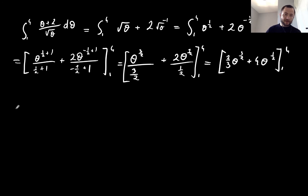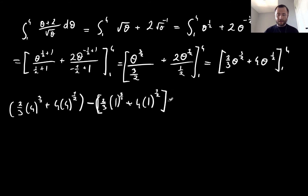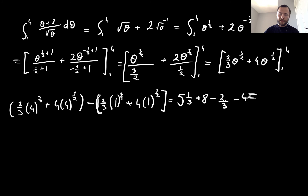Substituting the values: (2/3)(4^(3/2)) + 4(4^(1/2)) minus (2/3)(1^(3/2)) + 4(1^(1/2)). Calculating: from the first bracket I get 5 and one third plus 8; from the second bracket I subtract two thirds and 4. Adding everything together gives 8 and two thirds.